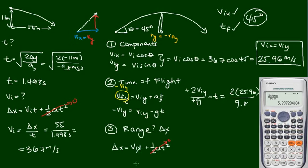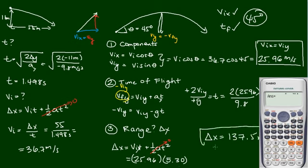Vix*t, we know that vix is also 25.96 and we multiply that to the time we just solved, 5.30 seconds. So let's get the calculator out again. That answer times 25.96 gives me 137.5. Okay, so that's delta x is equal to around 137.5 meters.